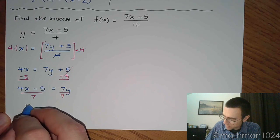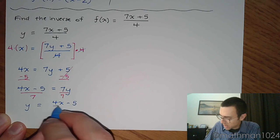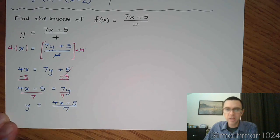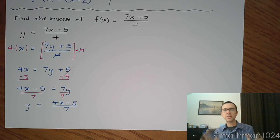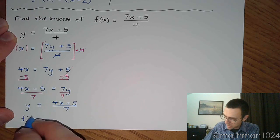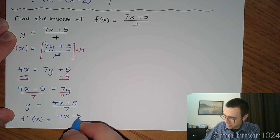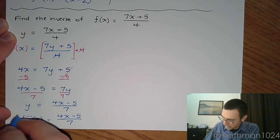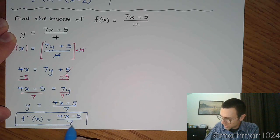And so now we have, let's put the y on the left side, y equals 4x minus 5 divided by 7. Okay. So we exchange the x for y and the y for x. Solve for y by undoing these steps one at a time. And now that we're down here, we rewrite y using the inverse function notation like this. So this is your inverse function.